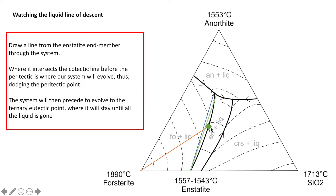Our system is going to evolve down that cotectic, but once it hits where the cotectic and the green line intersect, it's going to follow the green line towards the ternary eutectic, bypassing the peritectic point up here. The system is going to hit that intersection, skip the peritectic point, and evolve towards the ternary eutectic point, where it's going to stay until all the liquid is crystallised. There are no discontinuous reactions in this particular example.